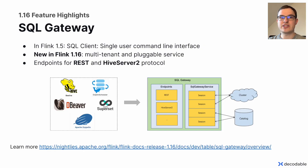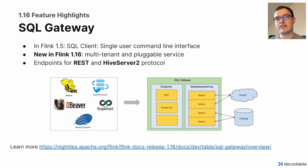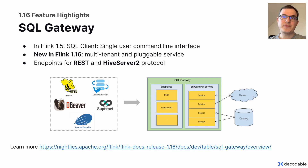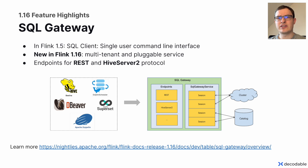One feature highlight in Flink 1.16 is the new SQL gateway. Since Flink 1.15, Flink offered a command line SQL client that allows you to execute SQL queries on the command line, including an ASCII table for visualizing the results of a query. Since Flink 1.16, we introduced a multi-tenant pluggable service that allows you to connect to this gateway and submit queries to Flink. In this first release, we offer endpoints for REST and for the Hive 2.0 protocol.